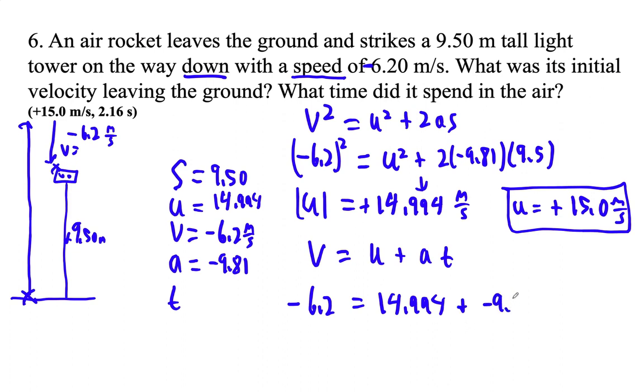And then that's plus negative 9.81 times T. I'm just filling this in. Sorry for jumping around there. So I'm using this formula, V equals U plus AT. This is V. That's U.